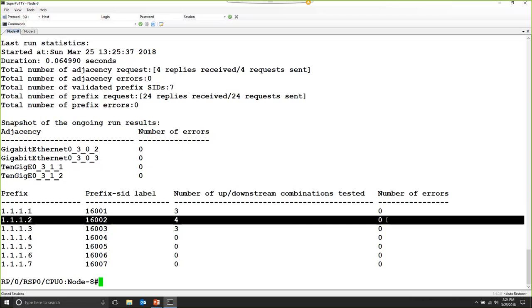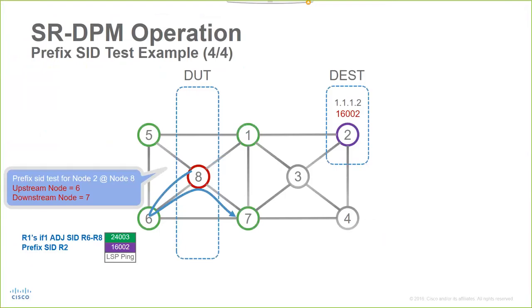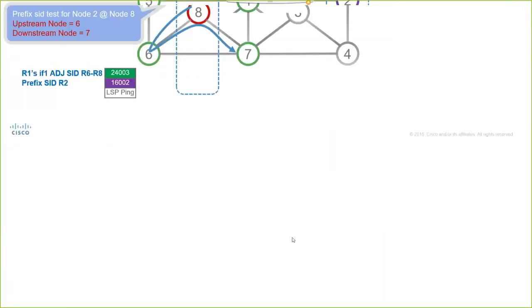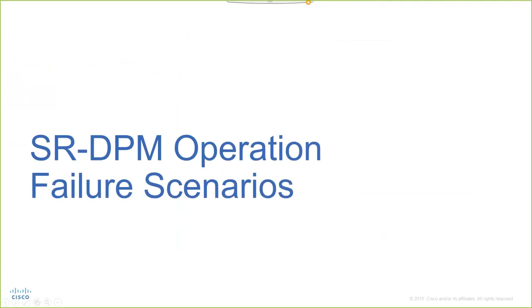We can see similar results for the remaining prefix seeds in the topology. Let's go back to the slides. Well, let's now observe how DPM would detect and react to forwarding inconsistencies present on a given node.